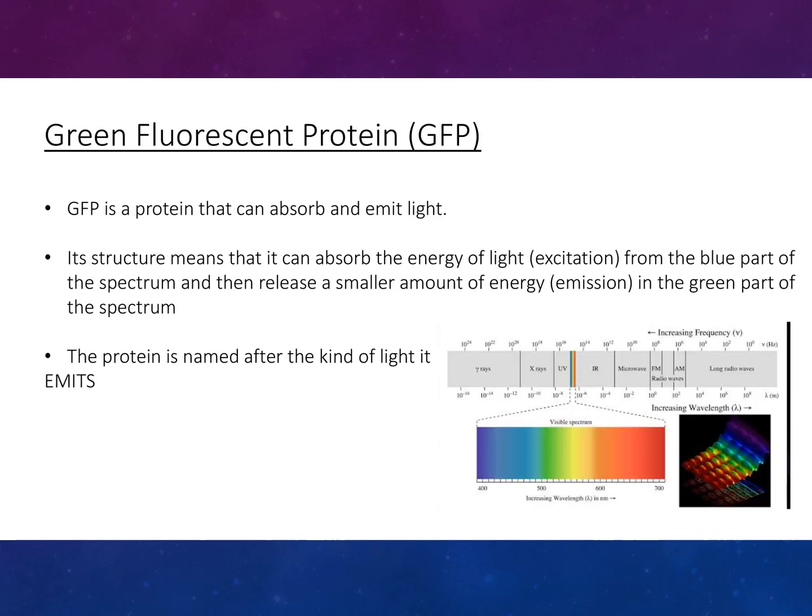Green fluorescent protein (GFP) is a protein that can absorb and emit light. Its structure means that it can absorb energy — excitation — in the blue part of the spectrum to release a smaller amount of energy — emission — in the green part of the spectrum. The protein is named after the kind of light that it emits.